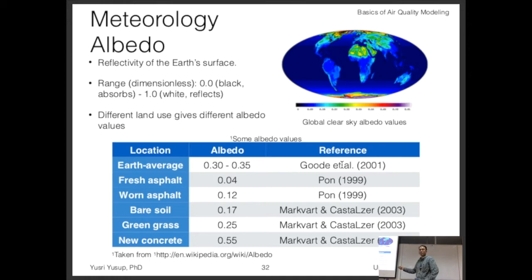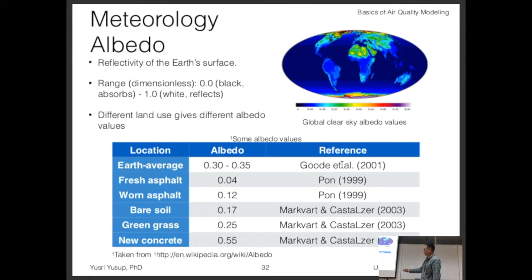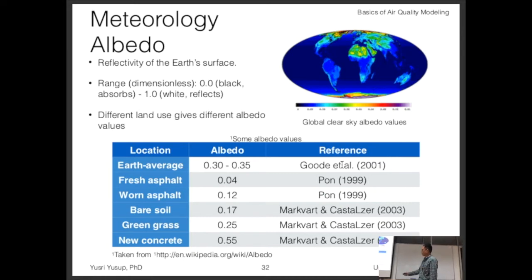The earth average is 0.3 to 0.35 as a reference. Fresh asphalt — those black roads — has an albedo of 0.04. Worn asphalt becomes whiter as it ages, so that becomes 0.12. Bare soil, brown in color, is 0.17. Green grass, which needs to absorb energy for photosynthesis, is 0.25. New concrete is 0.55 — it appears darker in this case. Most of these values are for urban surfaces.